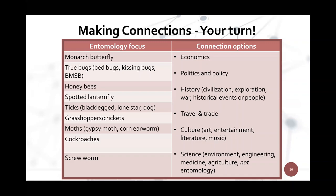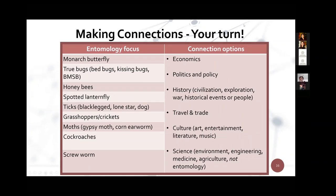Now it's your turn to make some of these connections. We'll be placing you in breakout rooms — feel free to turn your cameras on if you want face-to-face interaction. As a group, choose one or two entomological focus areas from the left side and try to make connections to options like economics, travel and trade, culture, another science, or history. Make sure one person is chosen to share your findings when we reconvene by writing via the chat feature. We'll give you five minutes for discussion in your groups.